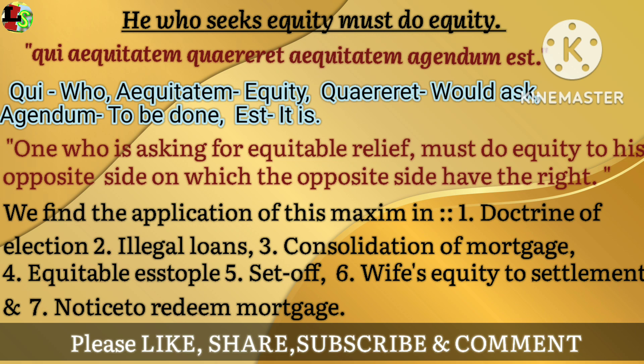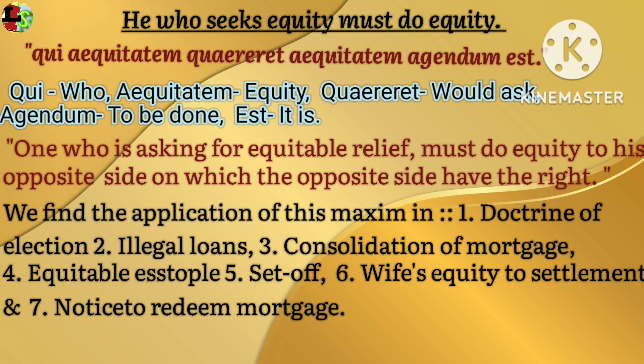He who seeks equity must do equity. In Latin it is: qui aequitatem quaerit, aequitatem agendum est. The maxim can be divided into two halves: one, he who seeks equity, and the second part is must do equity. One who is seeking equitable relief from the court must do justice or equity to his opponent or adversaries on which the opponent has the right. In other words, one who seeks equity must act in a just and fair manner and must accept the right of his adversaries or opponent.